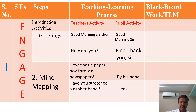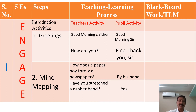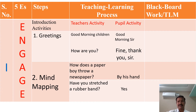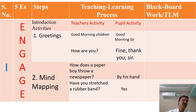Before preparing the table, you have to write some notes on the topic — for example, force. In this table there are five columns: serial number, five E's, steps, and teaching learning process. Within teaching learning process, there are two sub-columns: teacher's activity and pupils' activity. The fifth column is blackboard work or teaching learning material. This table is based on the five E's model.